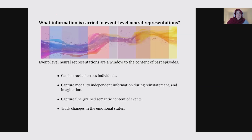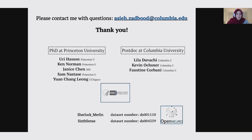To sum up, event-level neural representations are a window to the content of past episodes. They can be tracked across individuals, capture modality-independent information during re-enactments and imagination, capture fine-grained semantic content of events, and also track changes in emotional state. I hope this talk was interesting and informative. Please contact me with any questions. I want to thank my advisors and colleagues at both Princeton and Columbia. The datasets for the first and second study are available on OpenNeuro for researchers interested in these questions. Thank you so much for listening and have a great rest of the day at the conference.